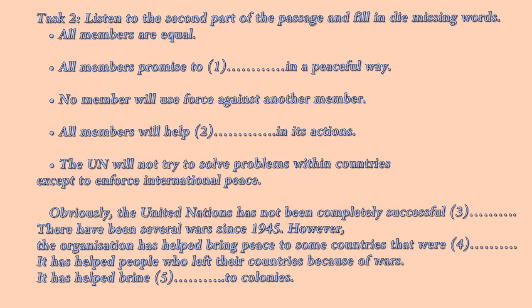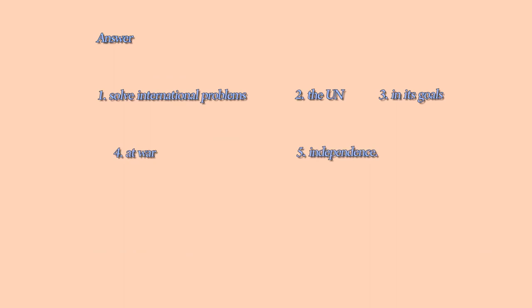Task 2. Listen to the second part of the passage and fill in the missing words. Today, almost every country in the world is a member of the U.N. Each country has signed an agreement that says: All members are equal. All members promise to solve international problems in a peaceful way. No member will use force against another member. All members will help the U.N. in its actions. The U.N. will not try to solve problems within countries except to enforce international peace. Obviously, the United Nations has not been completely successful in its goals. There have been several wars since 1945. However, the organization has helped bring peace to some countries that were at war. It has helped people who left their countries because of wars. It has helped bring independence to colonies.